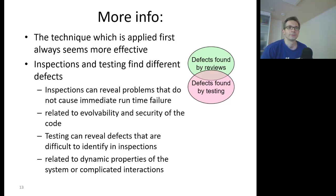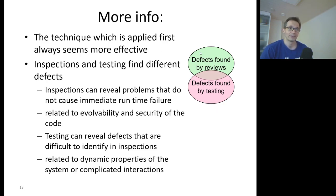Another important piece of information is that inspections and testing find different defects. Inspections can reveal problems that do not cause immediate runtime failures — those related to software evolvability, maintainability, or security of the code. While testing can reveal defects that are difficult to identify in inspection, such as those related to dynamic properties of the system or complicated interactions. As the defects found by testing and by reviews are only partially overlapping, the idea that we could use defects detected per hour to say which is better is rather naive.